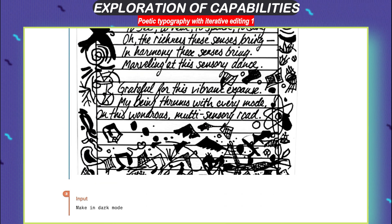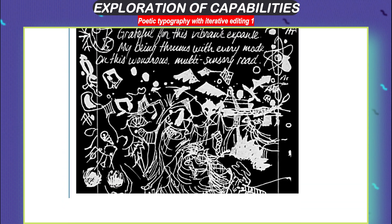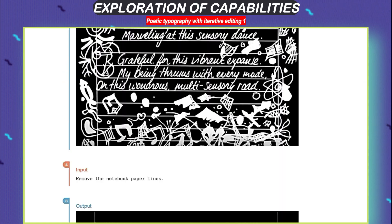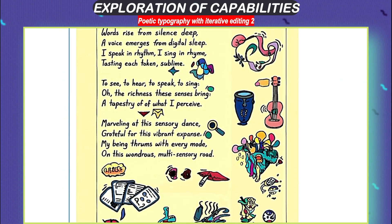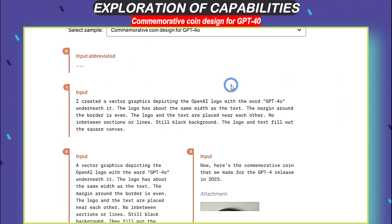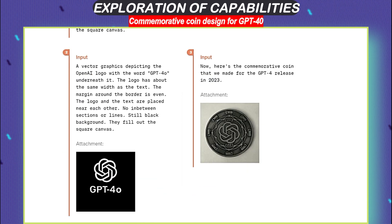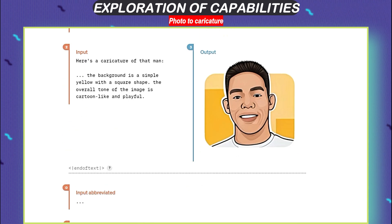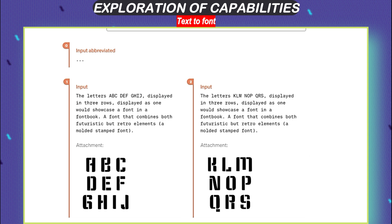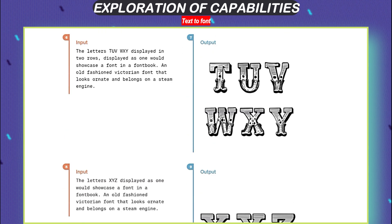Typography is just a fancy word for making text look cool. GPT-4O can do that really easily, making words look fancy without much work. It's also good at changing designs, like making logos or even turning regular photos into funny cartoons. And if you're into fonts, you can make your own with GPT-4O.